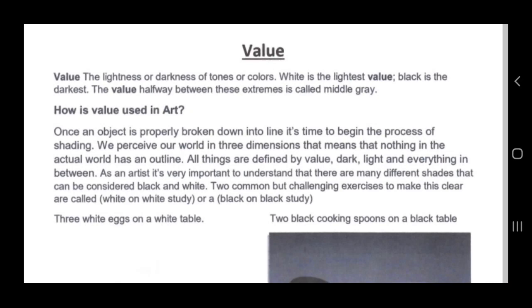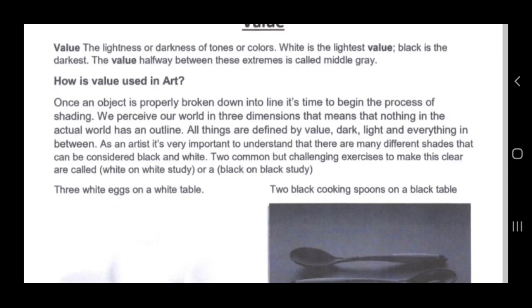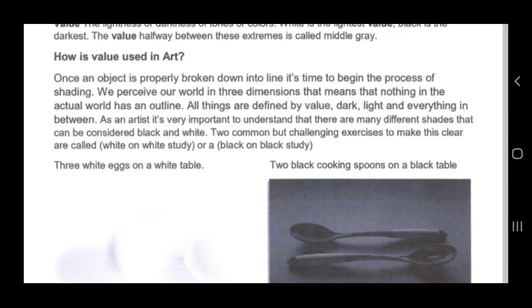Value — the lightness or darkness of tones or colors. White is the lightest value, black is the darkest, and the value halfway between these extremes is called middle gray. How is value used in art? Once an object is properly broken down into line, it's time to begin the process of shading. We perceive our world in three dimensions, meaning nothing in the actual world has an outline — all things are defined by value, dark, light, and everything in between.